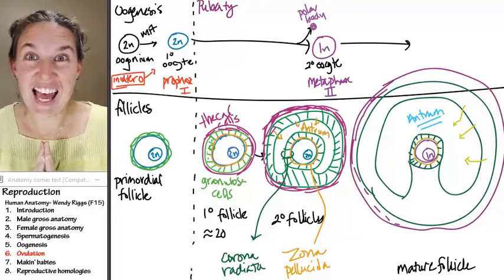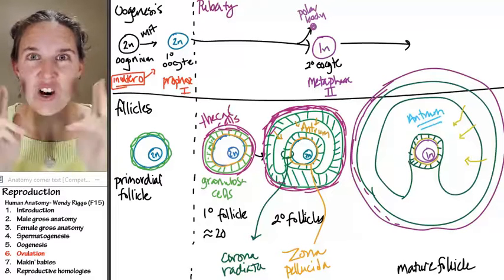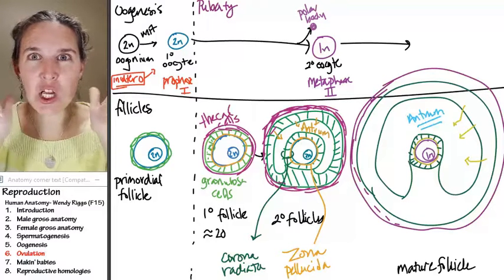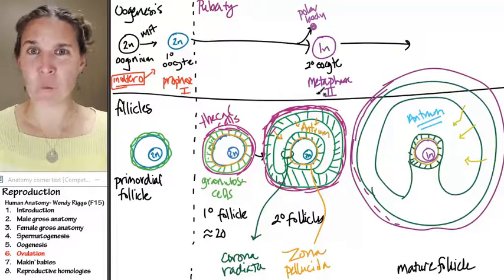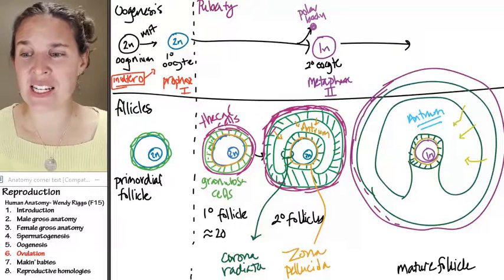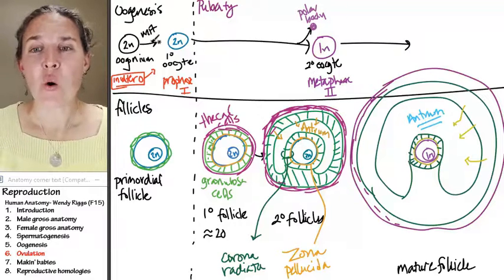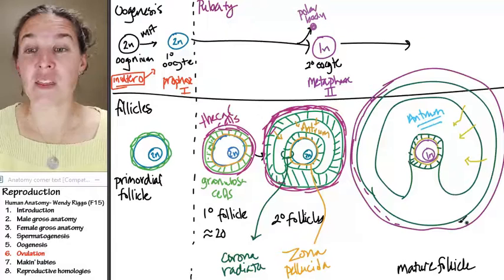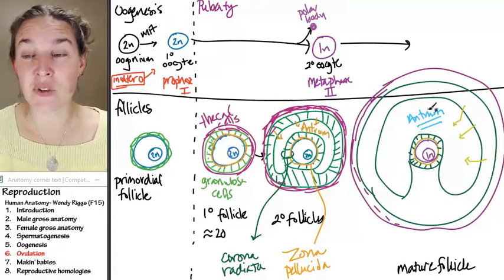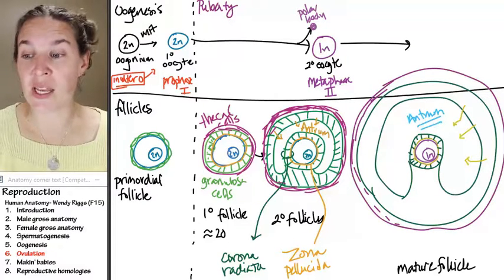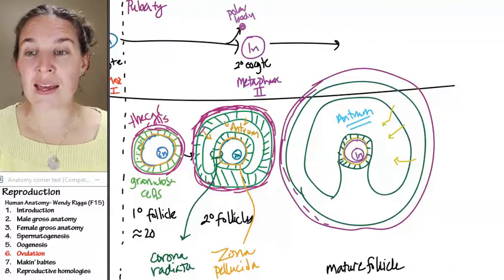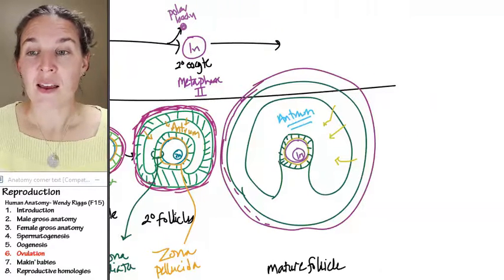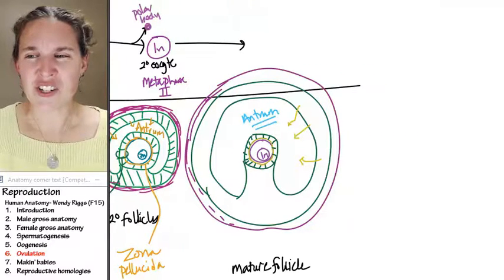The stage is set for an explosion, because that's what ovulation is. We now have this mature follicle. The granulosa cells are madly producing fluid that's filling the antrum. The antrum is getting bigger and the pressure is building.